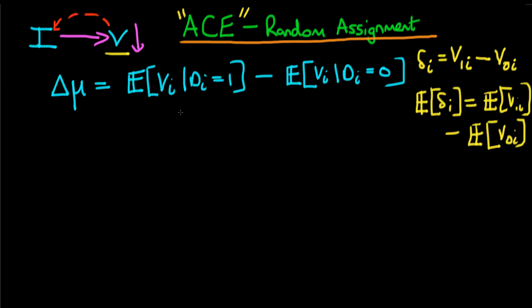In the last video we came up with an explicit expression for the difference in mean levels of violence between those states which did receive infrastructure spending and those that didn't. Because of this reverse causal effect — whereby states which had higher levels of violence anyway were the ones that actually received infrastructure spending — this was confounding our ability to understand the average causal effect.